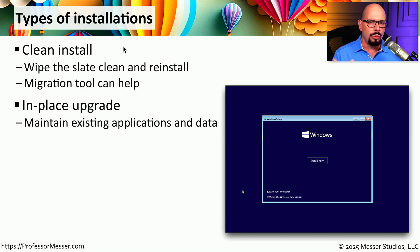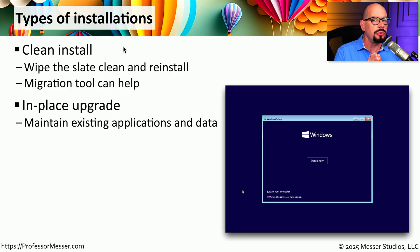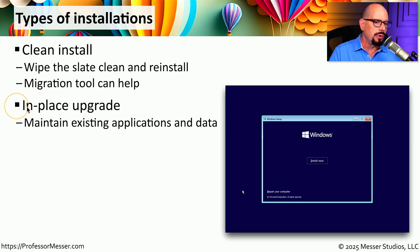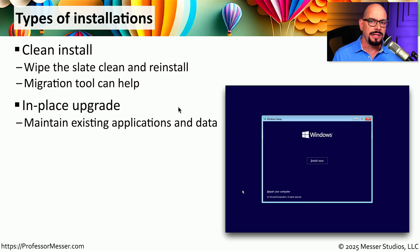If you already have a working operating system on this computer and you'd simply like to install a newer version while keeping all of your applications and all of your data in place, then you'll want to perform an in-place upgrade. This means you can update your operating system, but you don't have to install any new applications and you don't have to recover any of your data files from backup.